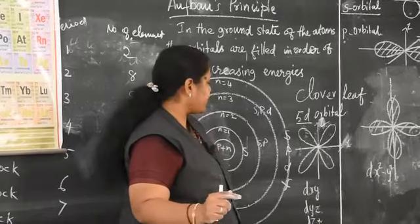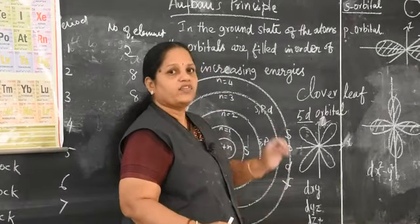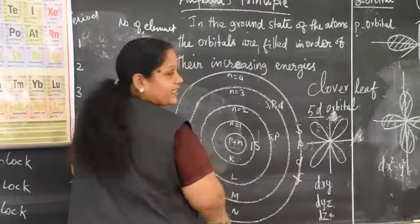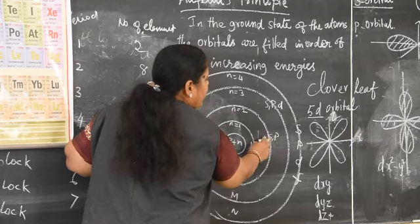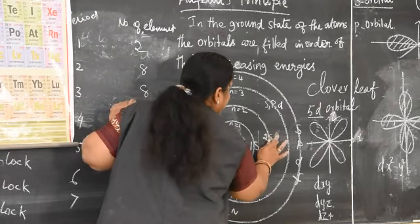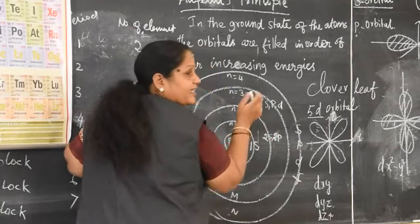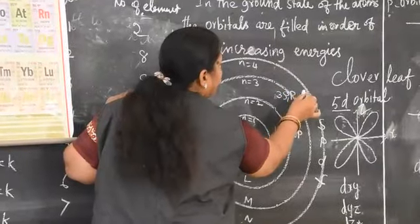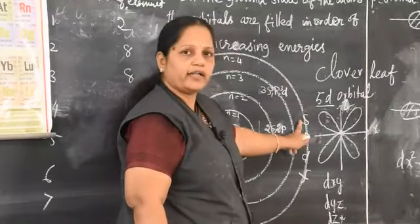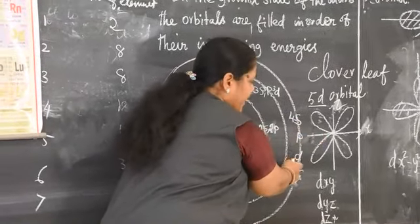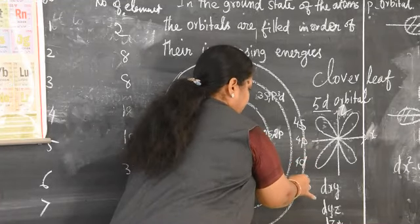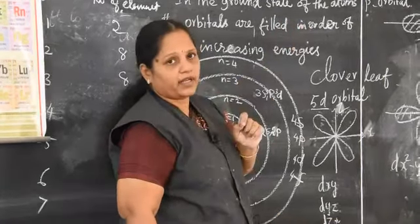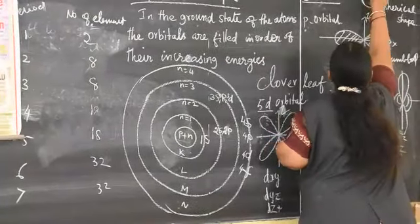So the energy levels are: 1S; then 2S, 2P; then 3S, 3P, 3D; then 4S, 4P, 4D, 4F; then 5S, 5P, 5D, 5F; then 6S, 6P, 6D, 6F. The lowest energy level is 1S. The S orbital is spherical in shape and non-directional.